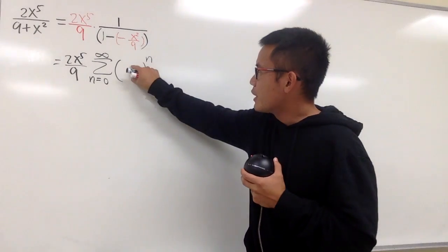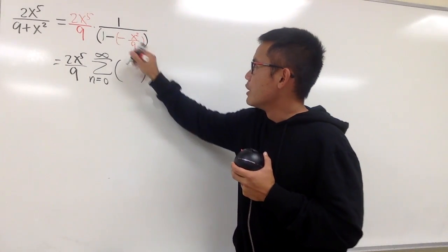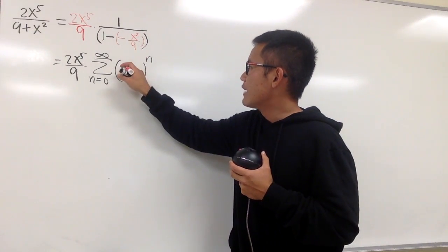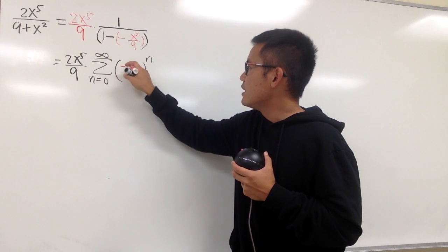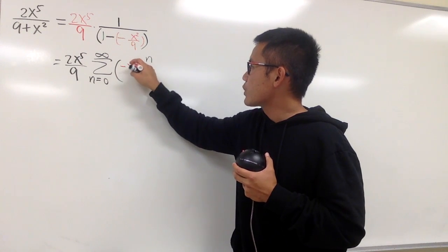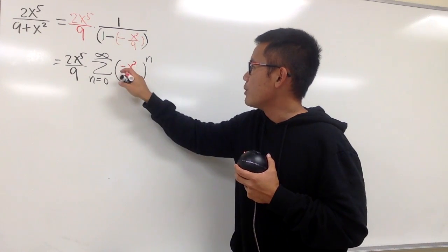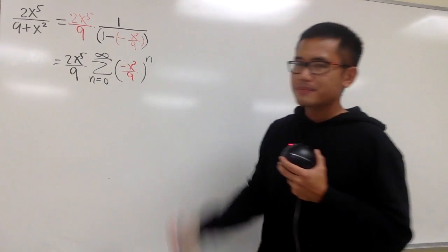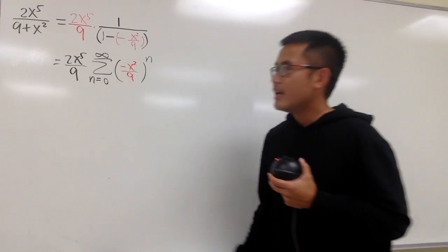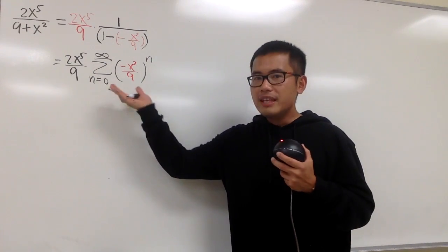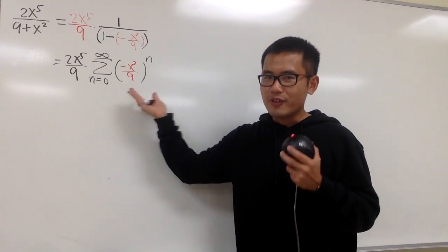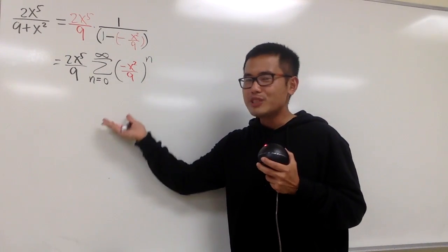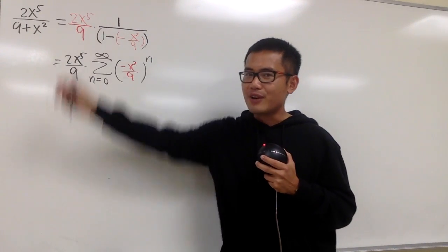This right here is just the input. We have negative x squared over 9, raised to the nth power. So this right here is the form for the power series for that function.